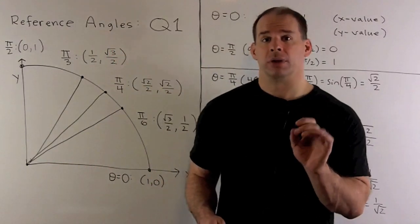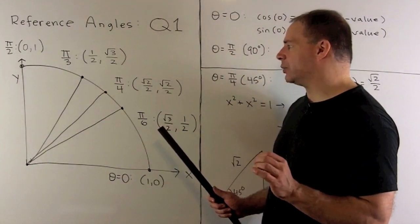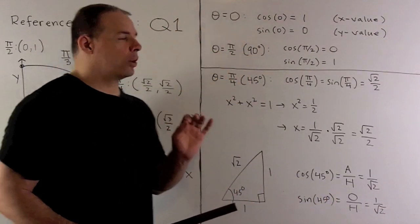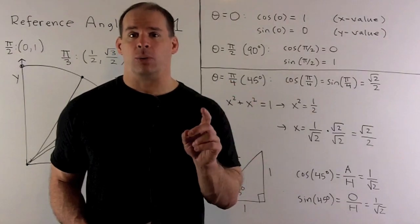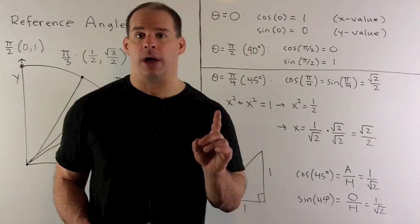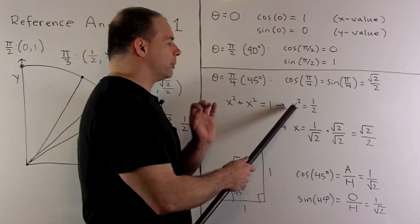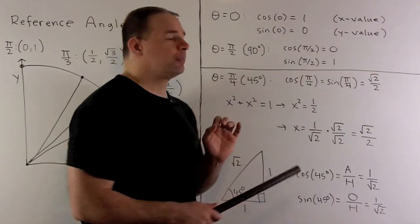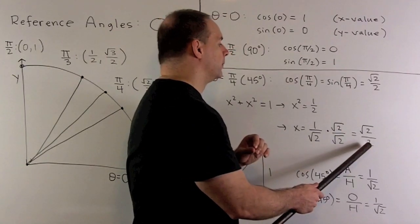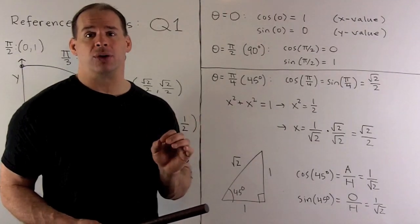The next important value, pretty easy to memorize, is π/4 or 45 degrees, where cosine and sine are both equal to √2/2. To derive that: on the 45-degree line we have y = x. Substituting y = x into x² + y² = 1 gives 2x² = 1, so x² = 1/2. Taking the positive square root gives x = 1/√2, and rationalizing by multiplying by √2/√2 gives x = √2/2. That's the cosine, and since y = x, sine is also √2/2.